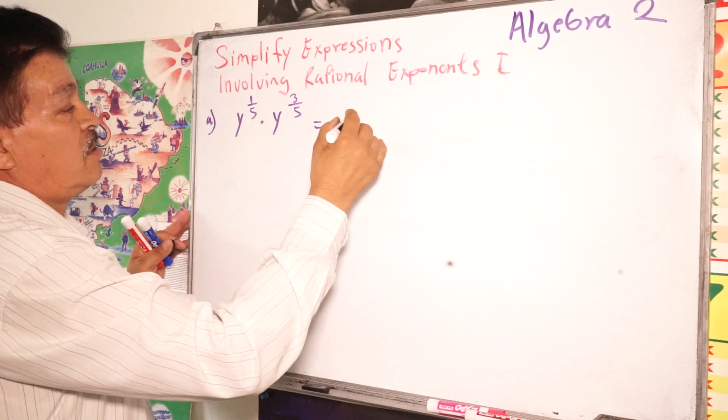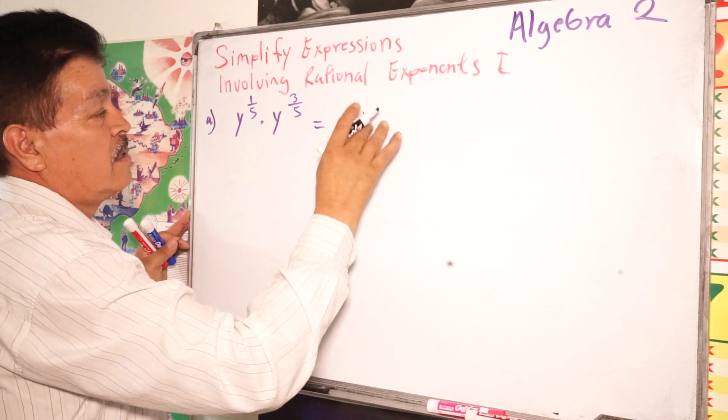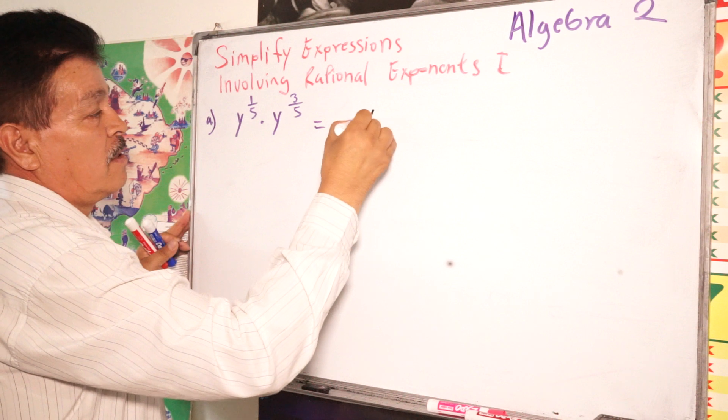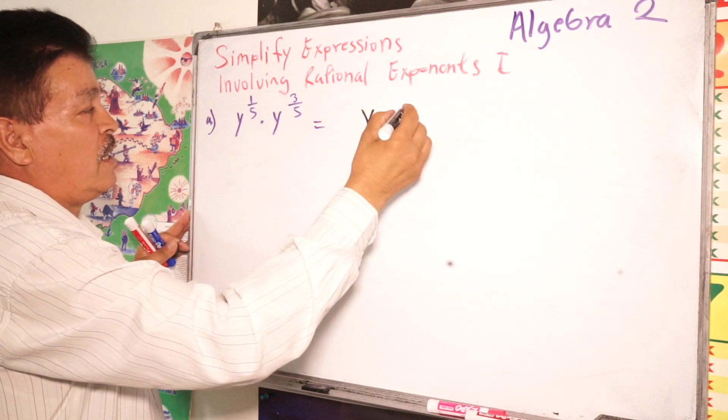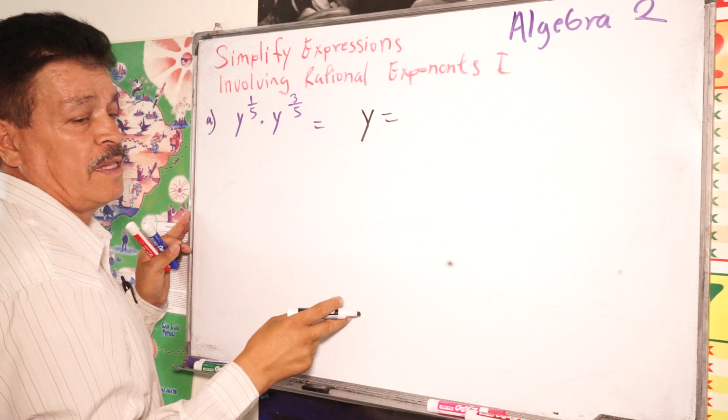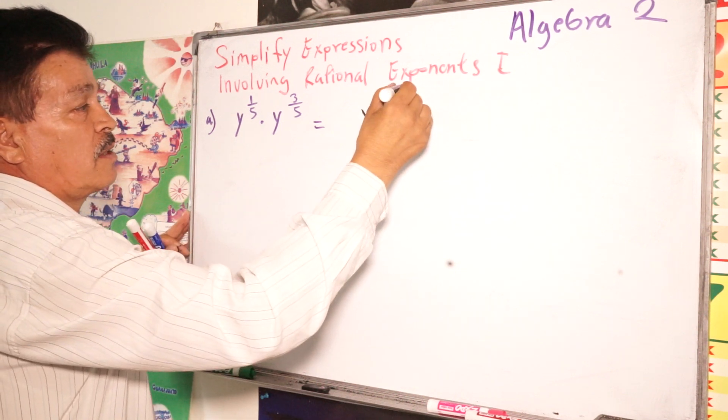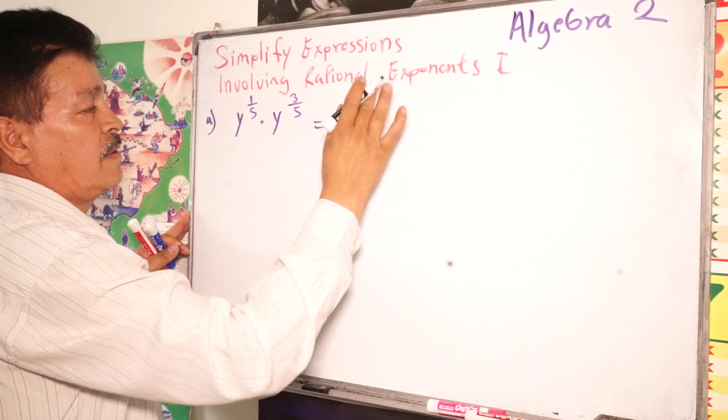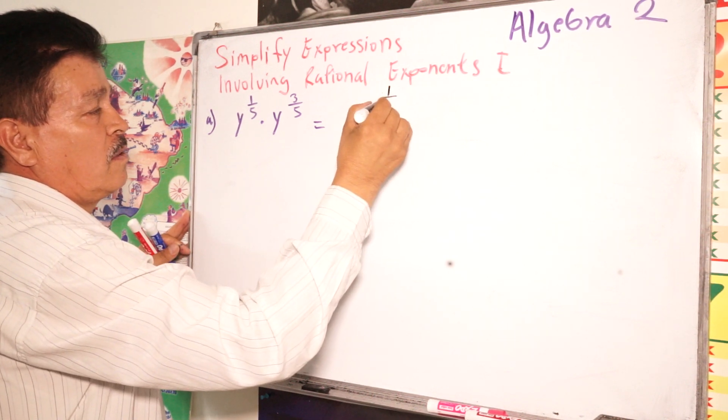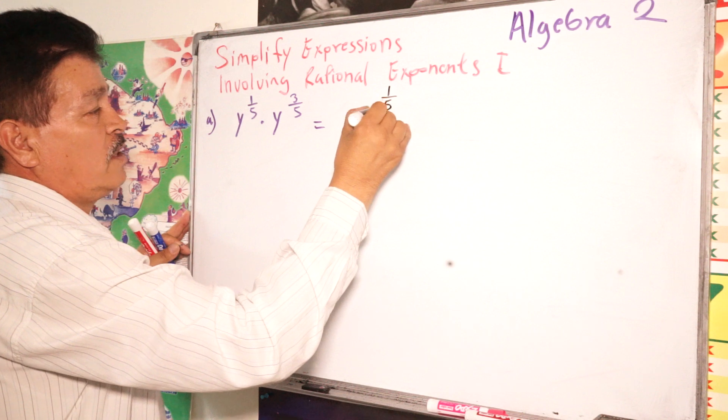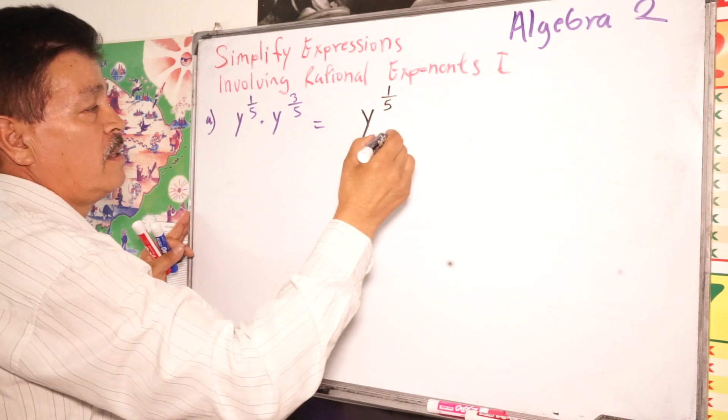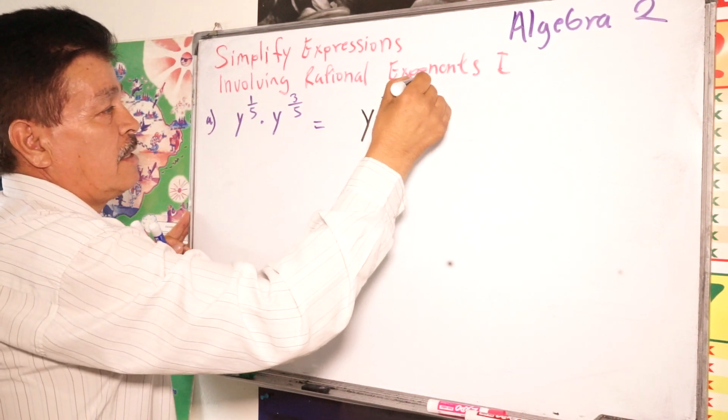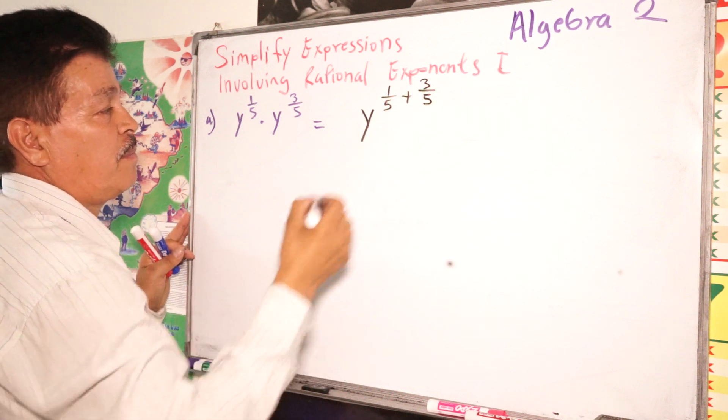So this will be Y. Y equals, remember the rule, we have to add exponents. Y to the 1 fifth power plus 3 fifth power, right?